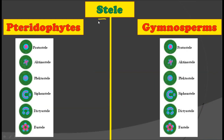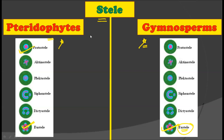The next difference is in their stele. Stele is a very defining characteristic in pteridophytes because we find various types of steles, ranging from protostele to eustele. On the other hand, in gymnosperms you usually find only the eustele. So there is a wide range of steles in pteridophytes while in gymnosperms there is usually only the eustele — an important anatomical difference between the two.